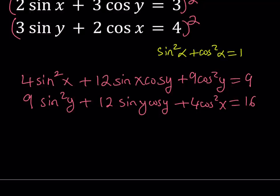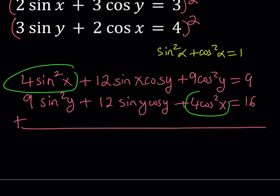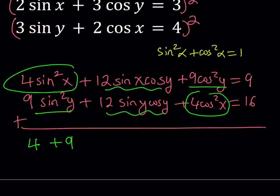Now, what I'd like to do is, I'd like to add these two equations, because notice that we have 4 sine squared here and 4 cosine squared here. And obviously, this means 4 times the quantity sine squared x plus cosine squared x, which is equal to 1, so that should give us a 4 there. We have 9 sine squared y and 9 cosine squared y. Their sum is going to be 9 for the same reason.